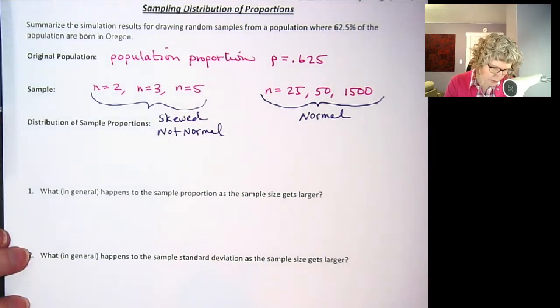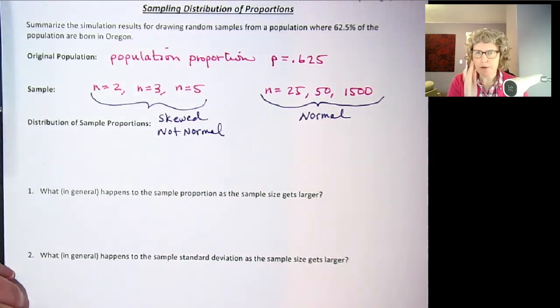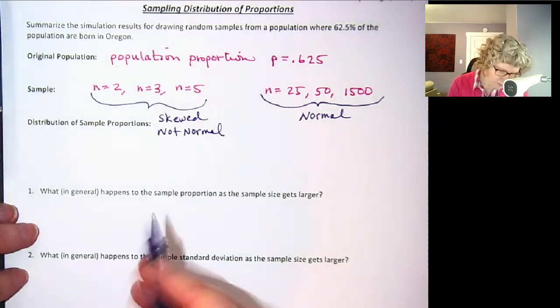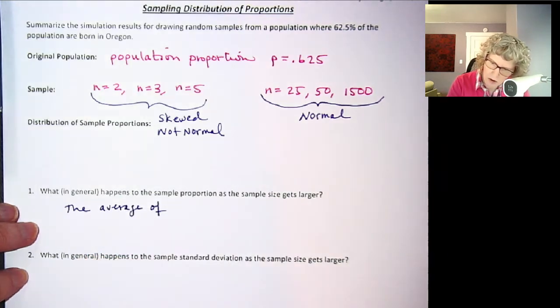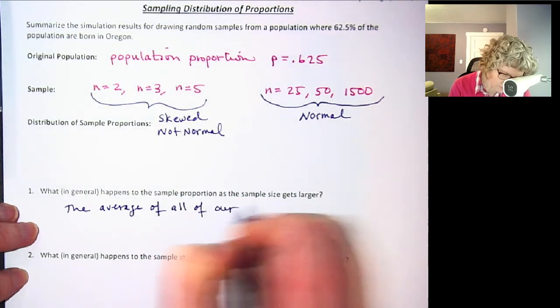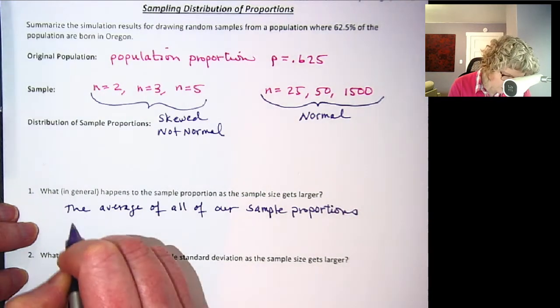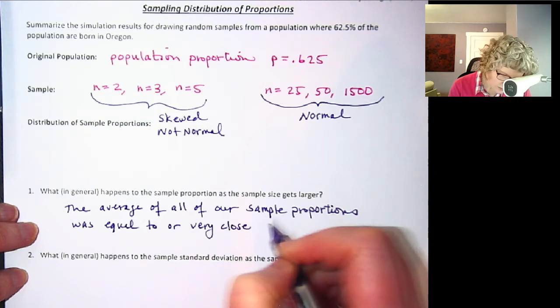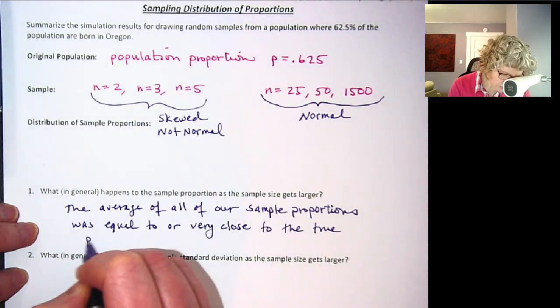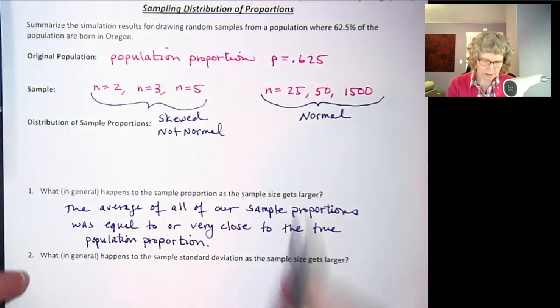So let's generalize this a little bit. What happens in general to the sample proportion as the sample size gets larger? Well remember how we saw that that average in the middle it stayed the same every time. So this is really the average of our sample proportions. So the mean or I'll say the average of all of our sample proportions was equal to or very close to the true population proportion, and as it gets larger it's only just going to get closer and closer to the population proportion.